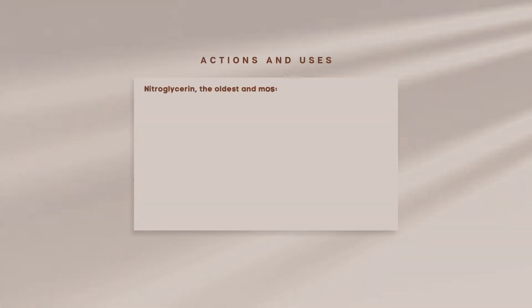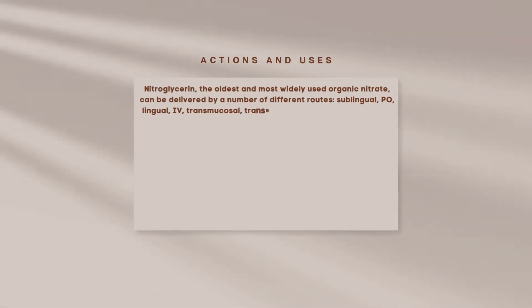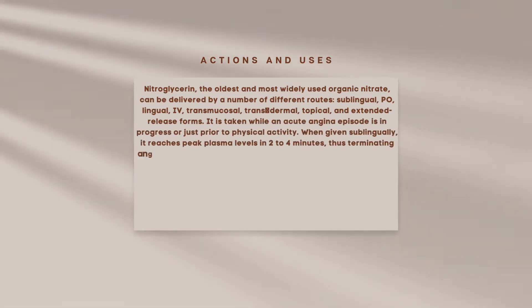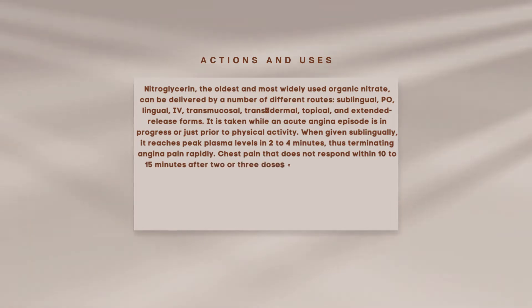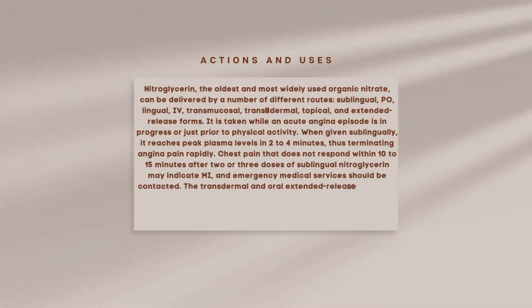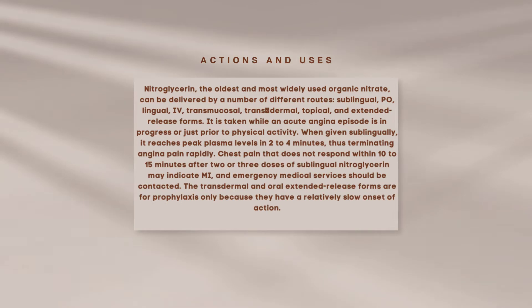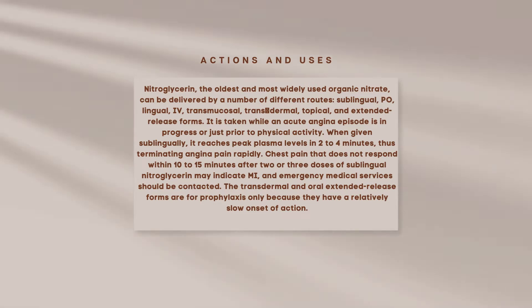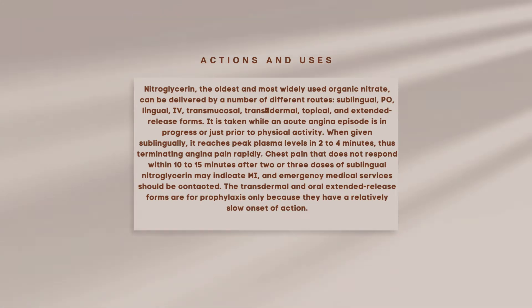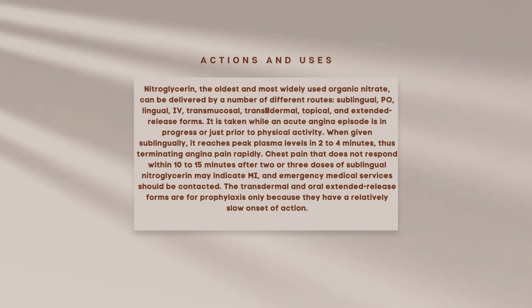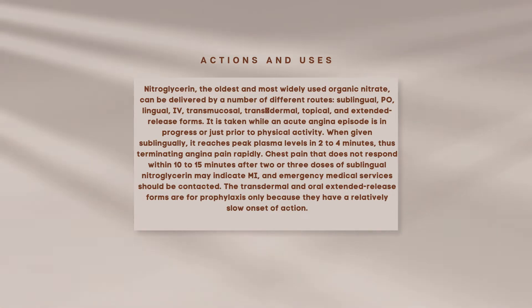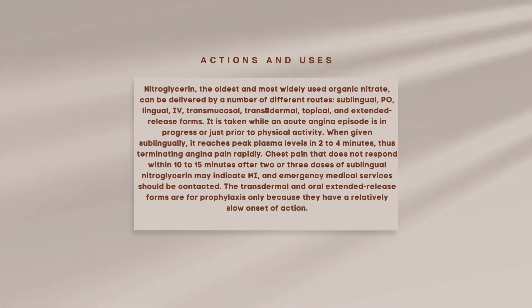Actions and Uses. Nitroglycerin, the oldest and most widely used organic nitrate, can be delivered by a number of different routes: sublingual, translingual, IV, transmucosal, transdermal, topical, and extended release forms. It is taken while an acute angina episode is in progress or just prior to physical activity. When given sublingually, it reaches peak plasma levels in 2-4 minutes, thus terminating angina pain rapidly.